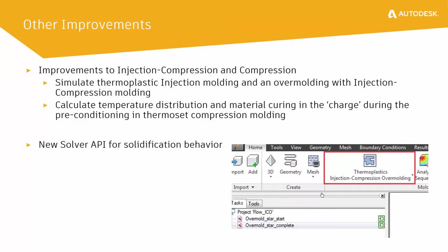We also made some improvements in the compression molding area. The first is that we added the capability to run an overmolding process where the first shot is an injection molding shot and then an overmolding done with compression molding. In prior releases we already had the capability to run compression molding with an injection molding overmolding, but now we also support the inverse option — first injection molding and then compression overmolding. We also added the ability to look at heat buildup in a charge when it's sitting in a mold before the compression starts. That heat distribution was previously assumed to be uniform, but when the charge is in contact with certain parts of the mold it may have a non-uniform temperature distribution, which will affect the properties as well as the flow behavior of the part.